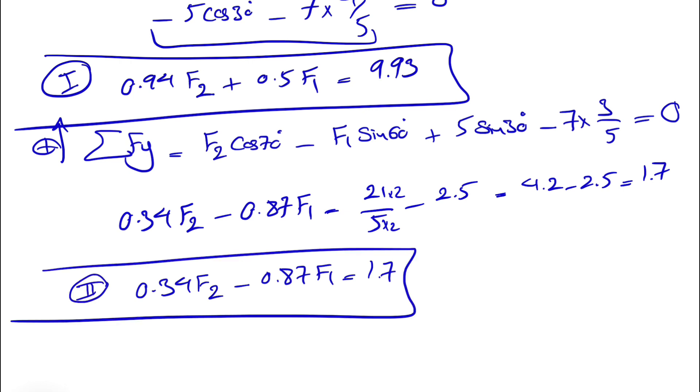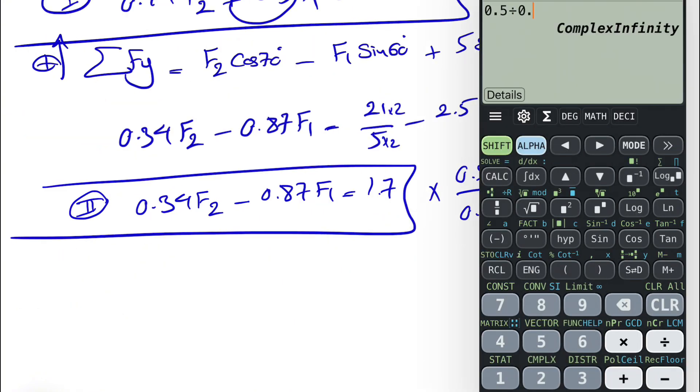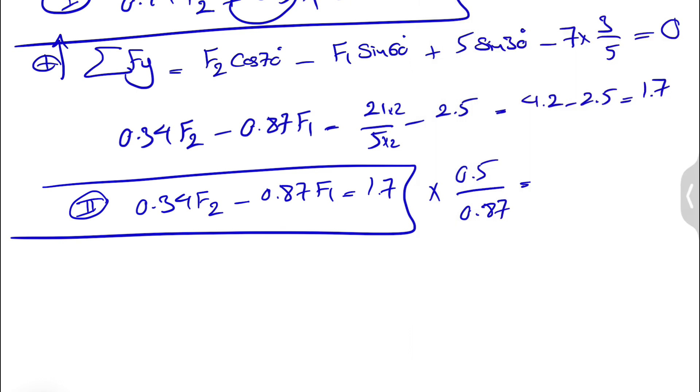So now we have two equations, two unknowns, and all we need to do is just to solve this equation. Let's get rid of F1. So we have to make something 0.5, which means we have to multiply this equation by 0.5 divided by 0.87. So 0.5 divided by 0.87, it's going to be 0.575.